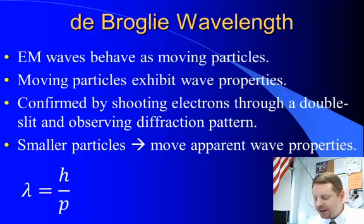And he confirmed this by shooting electrons through a double slit and observing the diffraction pattern. Very similar to Young's double slit experiment, but this time shooting electrons. Indicating that the electrons act like a wave because diffraction is a wave property. And the smaller the particles, the more apparent the wave properties.